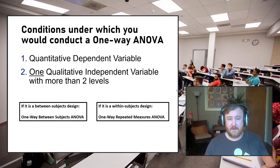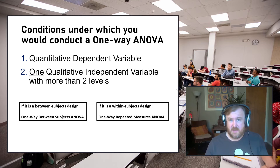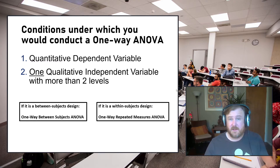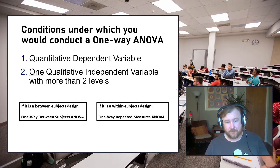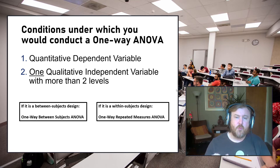In fact, you could do an independent groups t-test and then do a between-subjects ANOVA on the exact same two means, and t-squared would equal F — you'd get the exact same result. The third thing is to determine which type of ANOVA you're going to conduct.